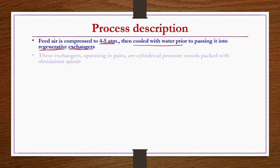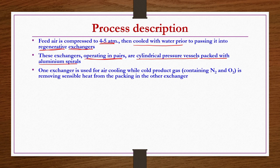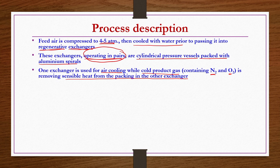What are these regenerative exchangers? They operate in pairs. From a unit operations point of view, these are physical pressure vessels packed with aluminum spirals, cylindrical in shape. One exchanger is used for air cooling while the cold product gas containing N2 and O2 removes sensible heat from the packing — the aluminum spirals — in the other exchanger.